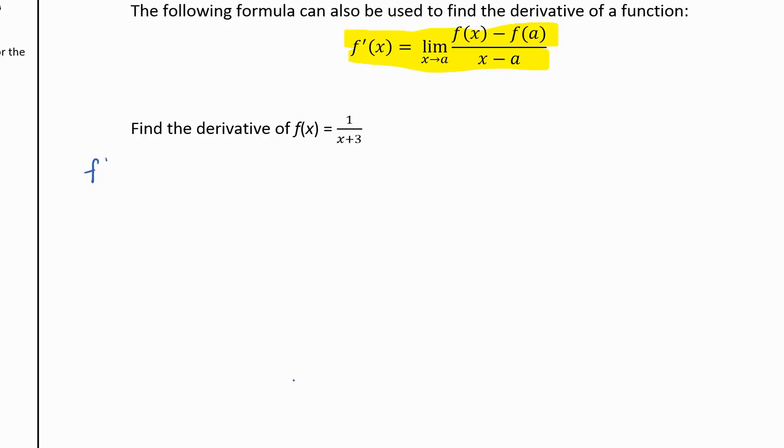So we're going to say f'(x) is equal to the limit as x goes to a. f(x) means we're just going to put in f(x), so 1 over x plus 3, minus f(a). Well, that's just plugging in a, so 1 over a plus 3, all over x minus a.